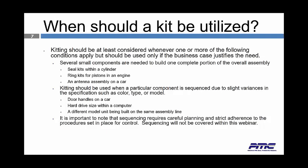Kits should be at least considered whenever one or more of the following conditions apply, but should be used only if the business case justifies the need. Several small components are needed to build one complete portion of an overall assembly, such as steel kits within a cylinder, ring kits for pistons in an engine, and antenna assembly on a car. Kitting should be used when a particular component is sequenced due to slight variances in specification, such as color, type, or model — for example, door handles, hard drives within a computer, or a different model unit being built on the same assembly line. Sequencing requires careful planning and strict adherence to procedures set in place for control, though sequencing will not be covered in this webinar.